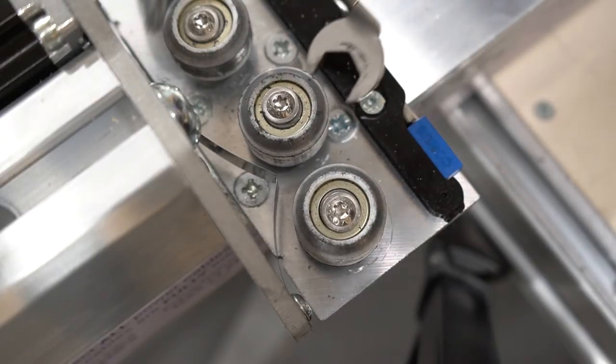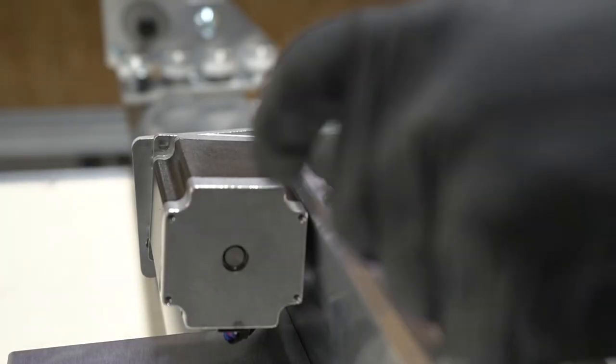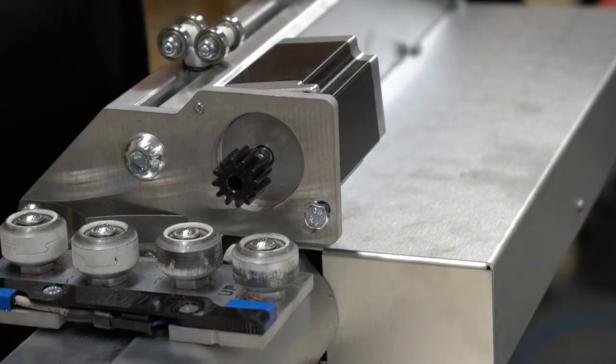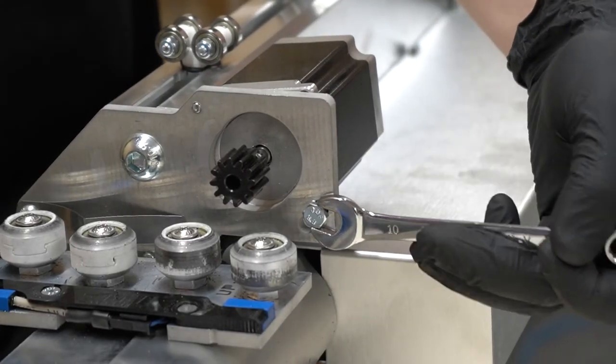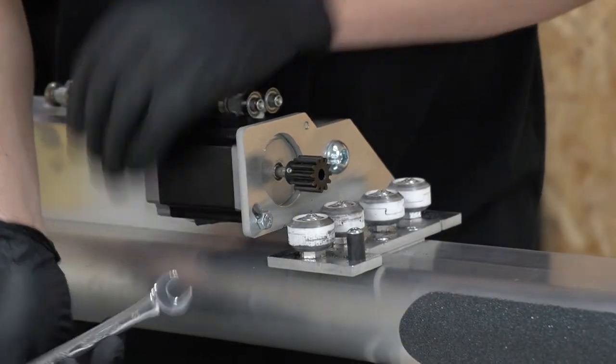Before pre-loading the wheels make sure the motor pinions are not engaged with the racks. To do this loosen the two bolts on each motor using a four millimeter hex driver and a 10 millimeter spanner. Then rotate the motors to their lowest position.